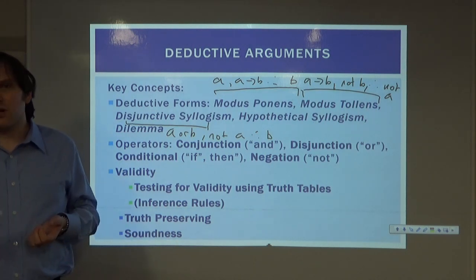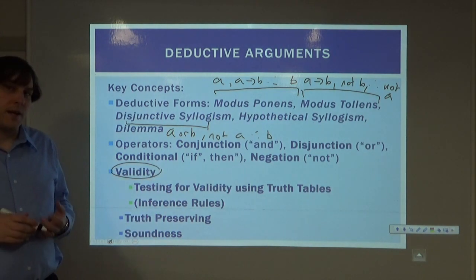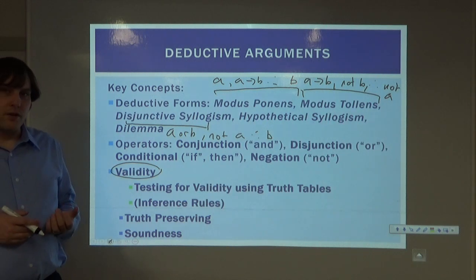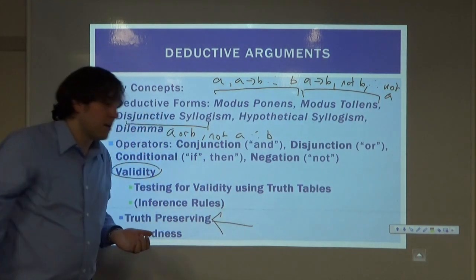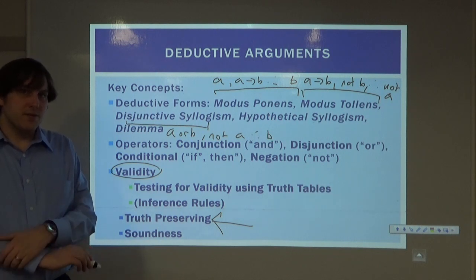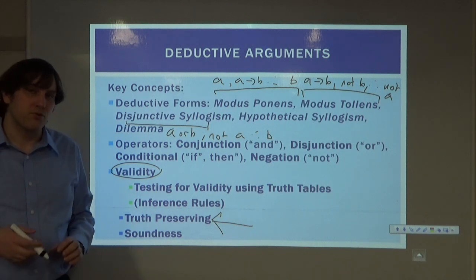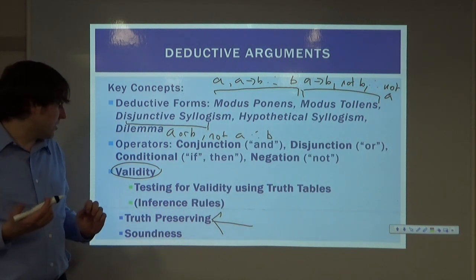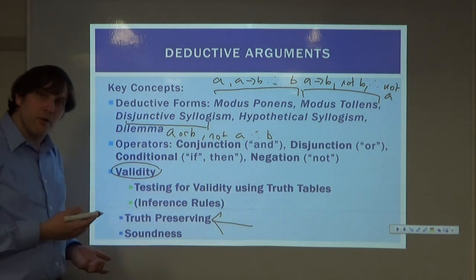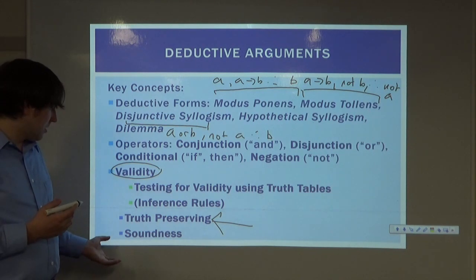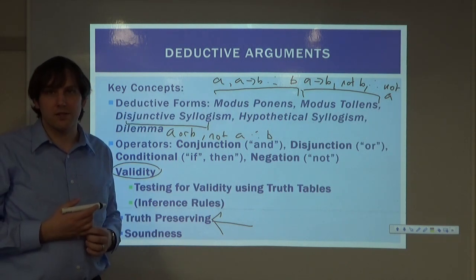The most important concept that we worked with was the concept of validity. Validity has to do with following rules, and the reason validity is valuable is because validity is truth-preserving. This means if we start with true premises and we have valid form, we will get a true conclusion. We can test for validity either by using truth tables or inference rules. When we have an argument that both has true premises and a valid form, we are looking at a sound argument — that is called soundness.